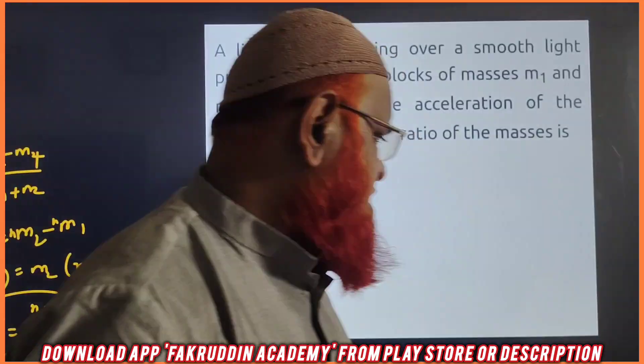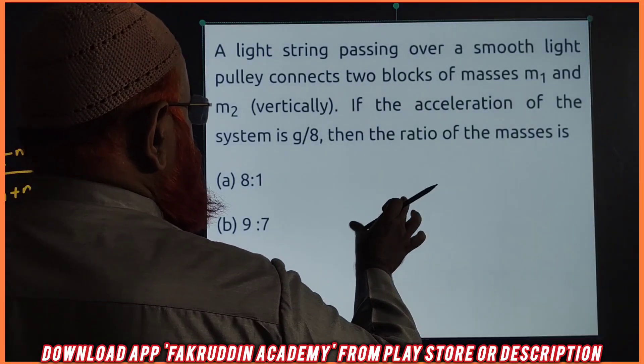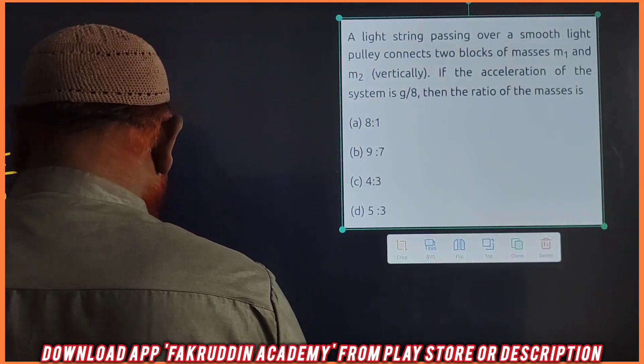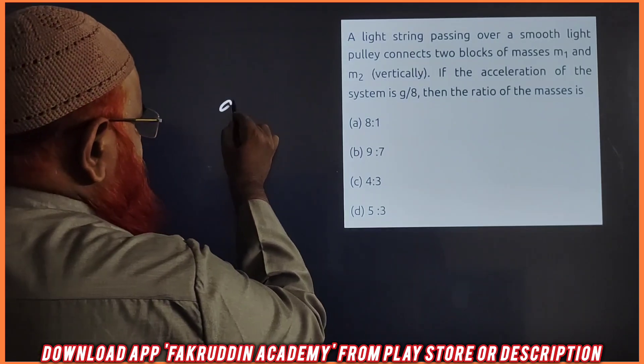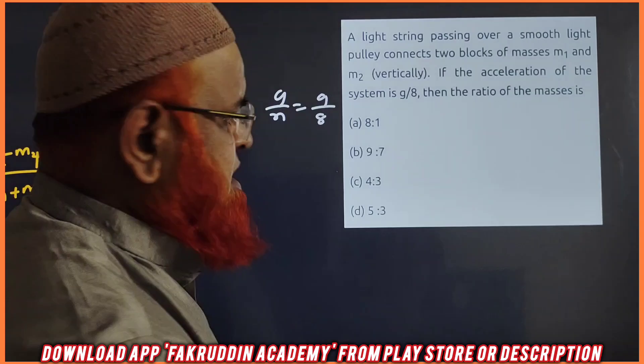You can solve another problem also by using the same logic. Let me discuss how I am going to solve this problem here. Same logic here. It is given that A is equal to G by N, in the place of G by N, 9 by 8 is present.